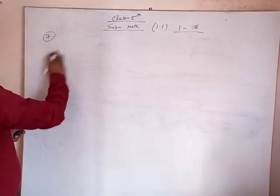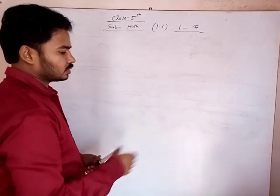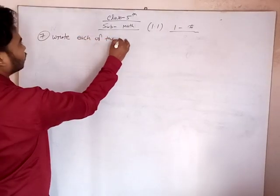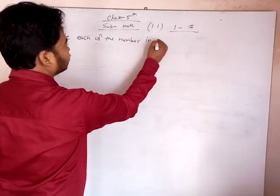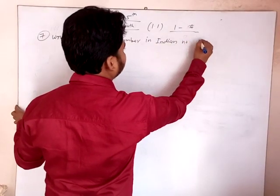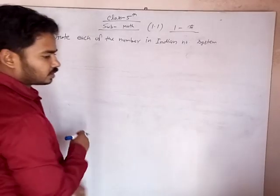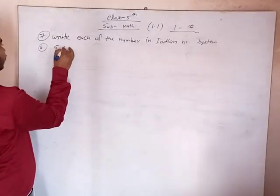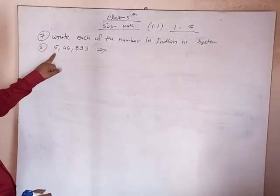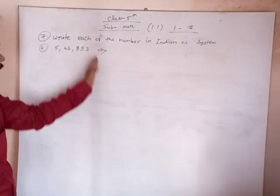Question number 7 is: write each of the following numbers in words using the Indian place value system. We take question number 7, that is 5,46,893. We write it in the Indian number system.